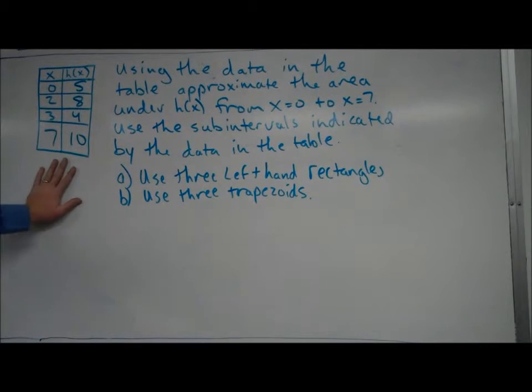Anyway, I've given you a table of values here for a function h of x and I've asked you to use that data to approximate the area under h of x from x equals 0 to x equals 7. Use the subintervals indicated by the data in the table to determine the widths of your intervals. For part A it's asking you to use three left hand rectangles and then part B, three trapezoids.